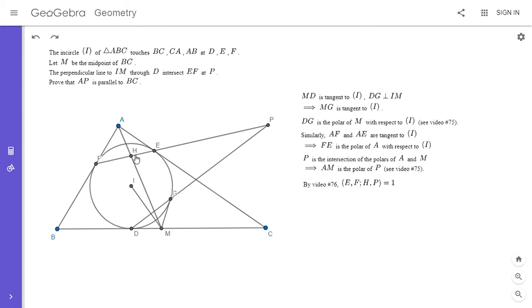If we project H through A, it goes to point M. And if we project P through A, well, we don't know where it intersects BC yet. So we'll just say AP intersect BC. But we ultimately want to show that AP is parallel to BC. So that would be the same as showing they intersect at the point at infinity. So that's what we want to show.